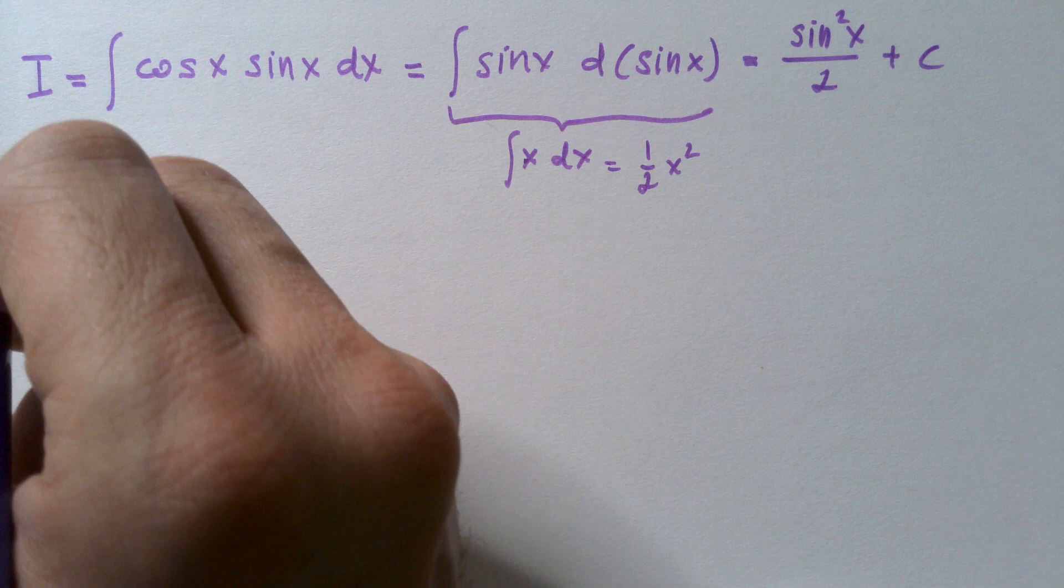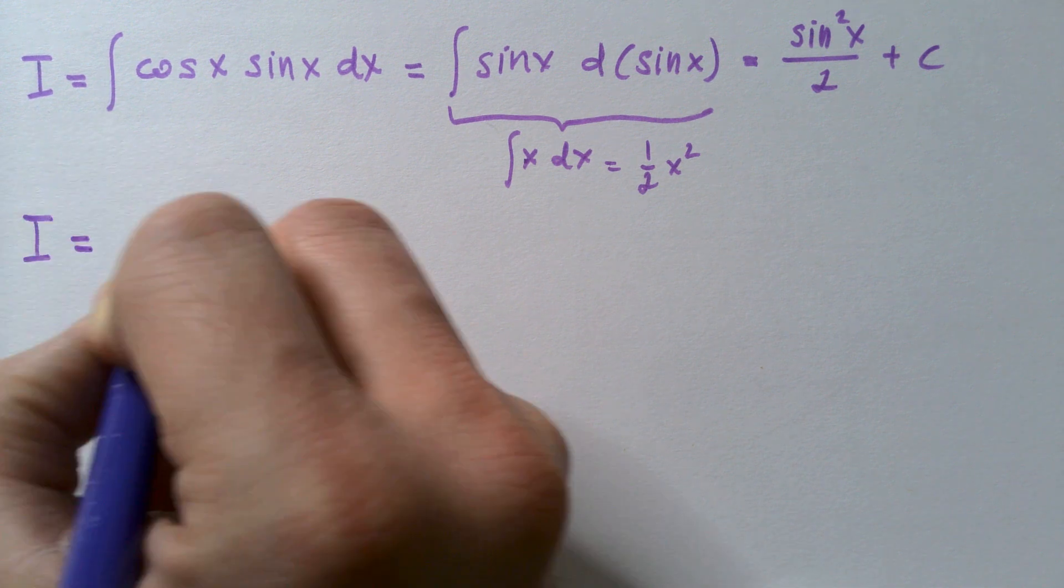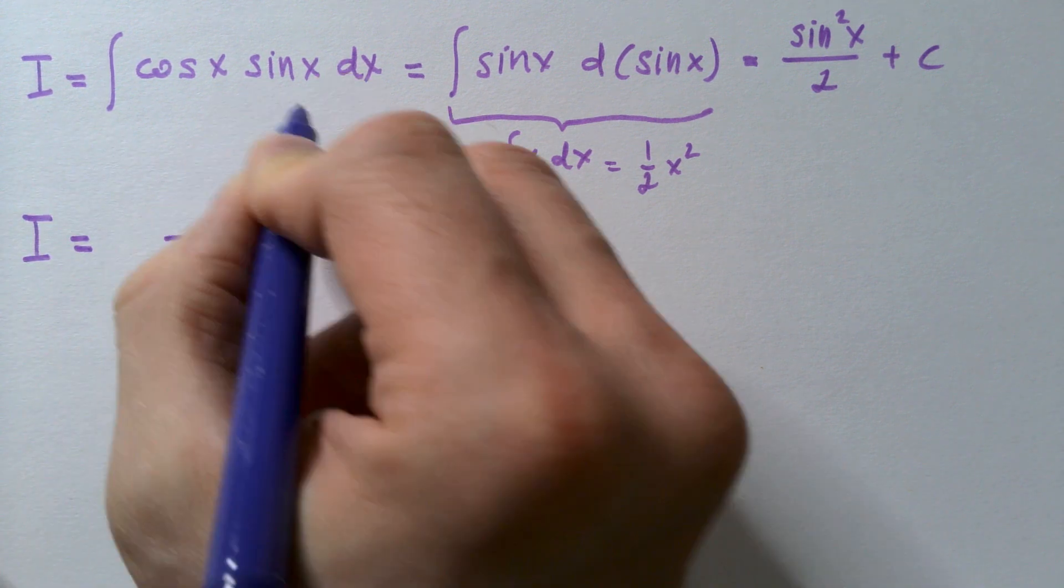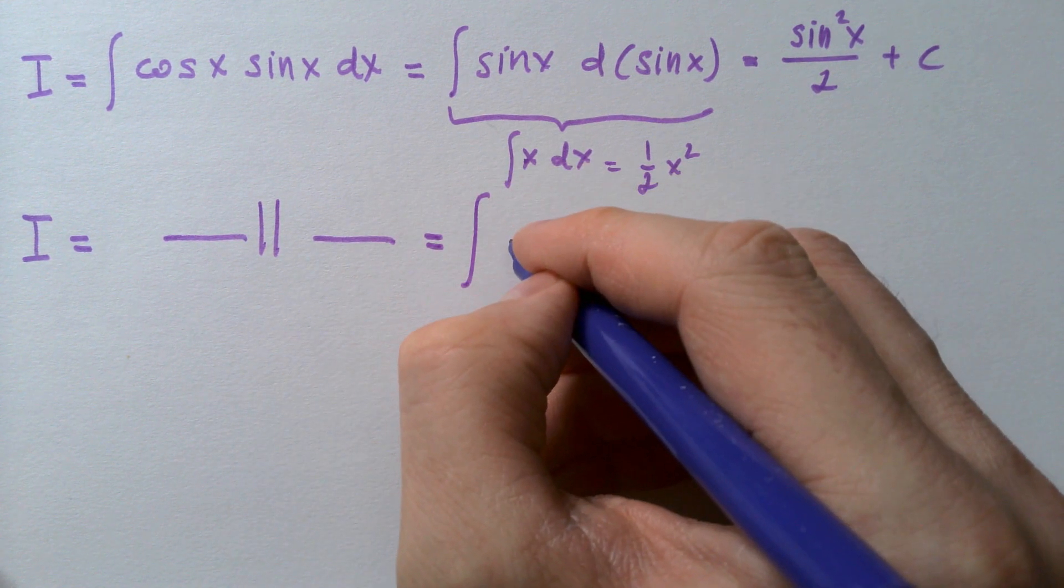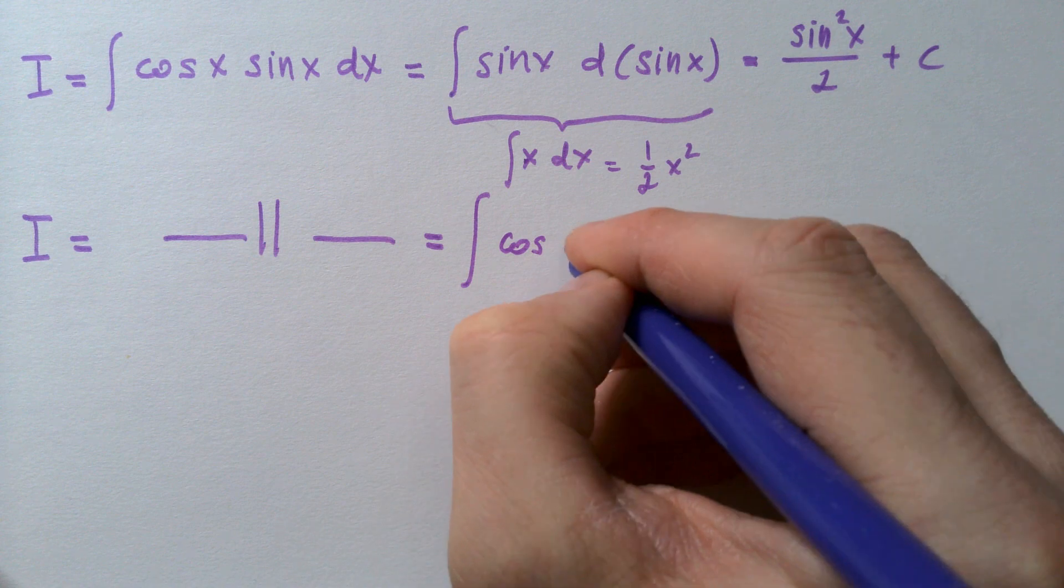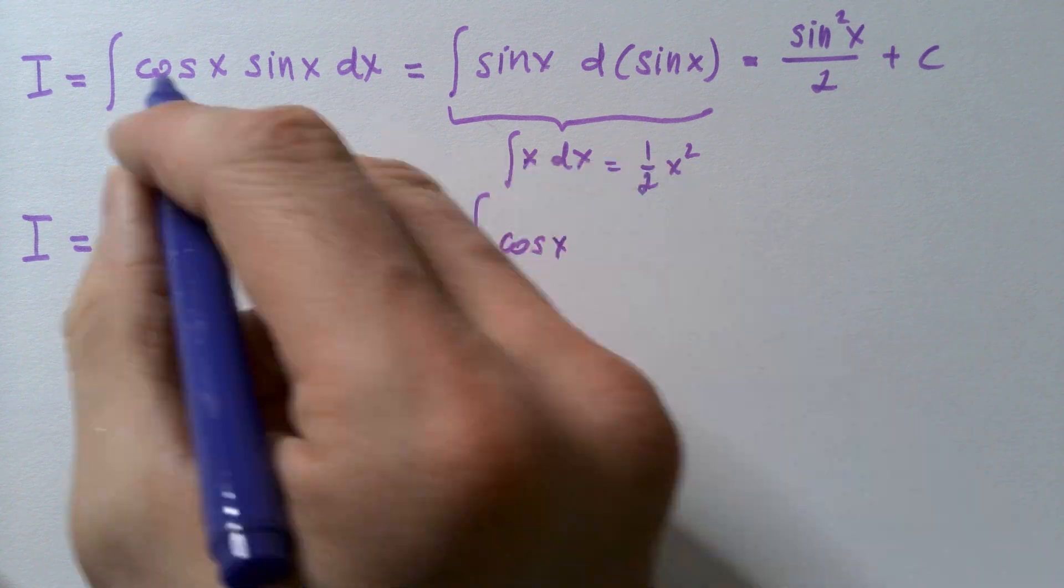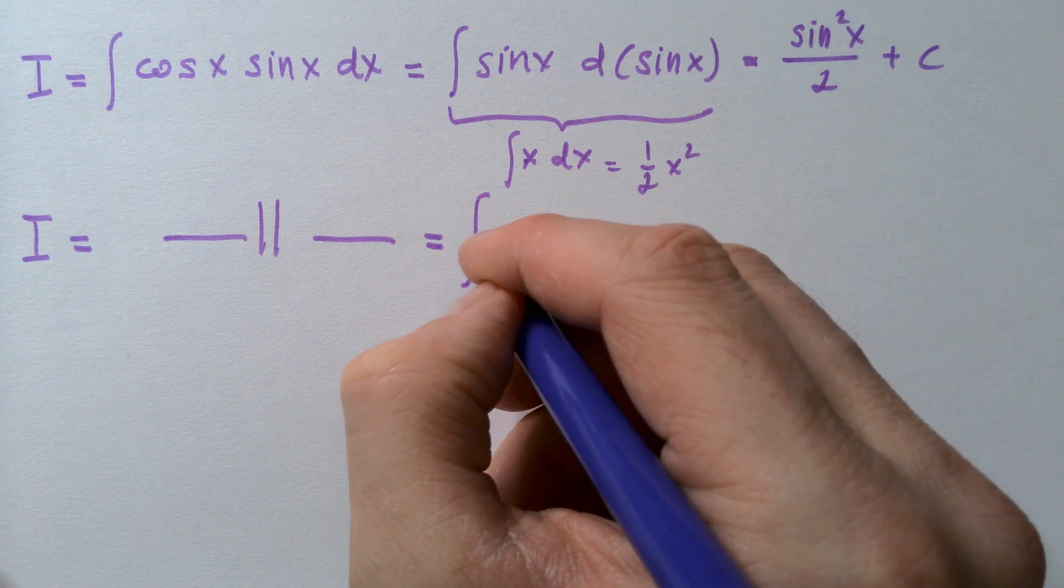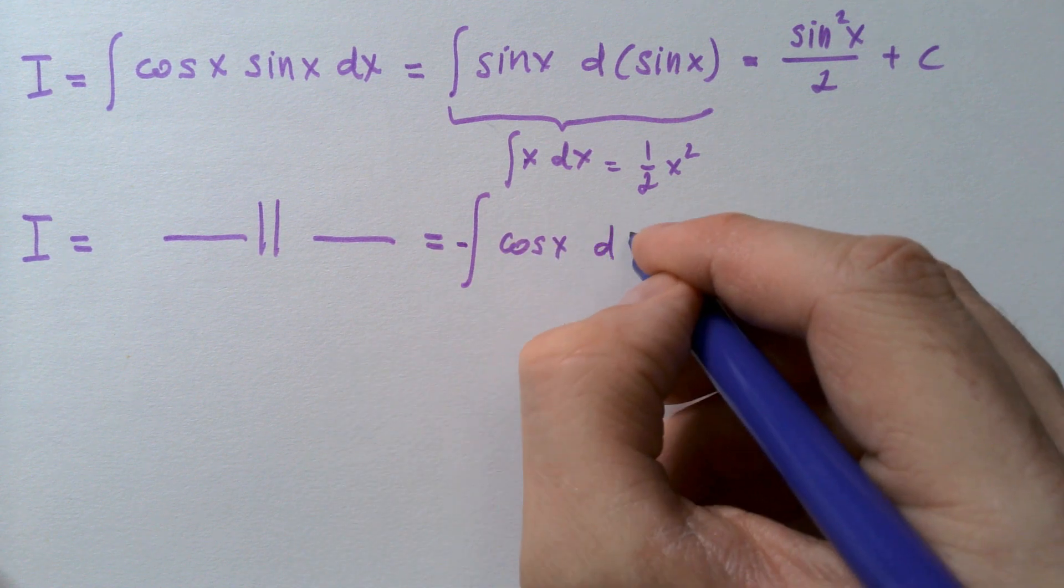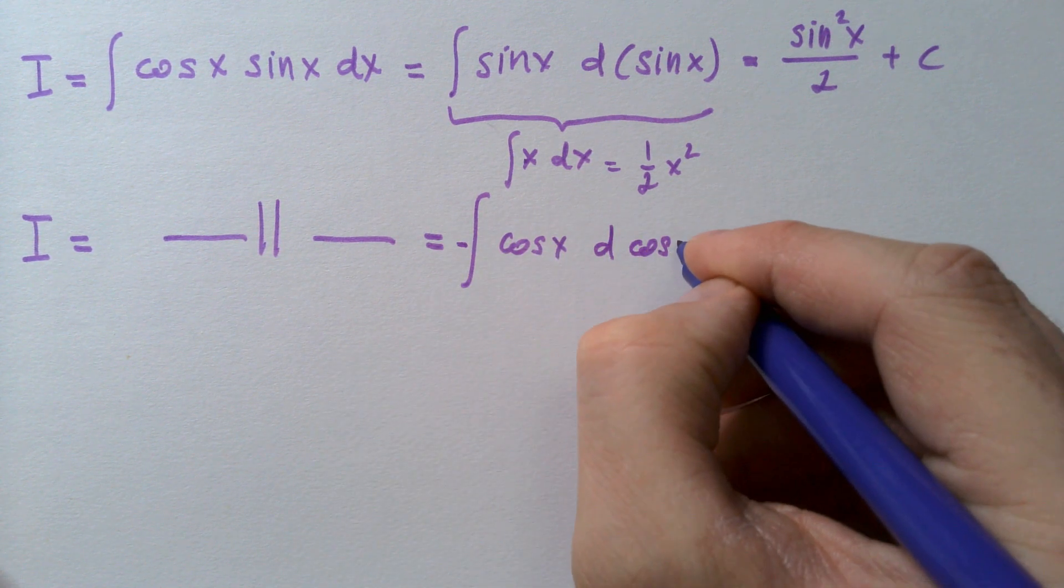Of course you can take an alternative route and say that this integral is really, I will write cosine x over here, I will keep cosine, and then write sine as negative derivative of cosine x.